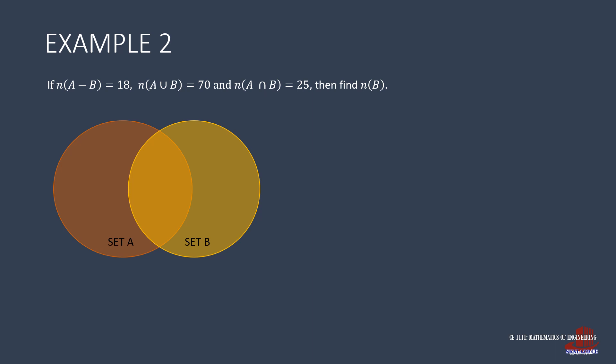Set A minus B has 18 elements, and that can be written on this part of the diagram. The next given parameter is the elements in the union of A and B, which is 70. Then lastly, the elements in the intersection of sets A and B is 25. So using the total number of elements, we can determine n(B - A).